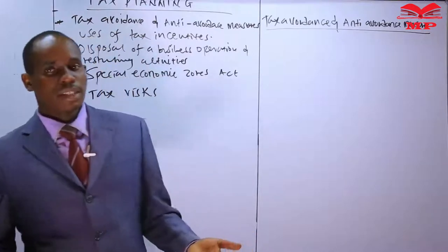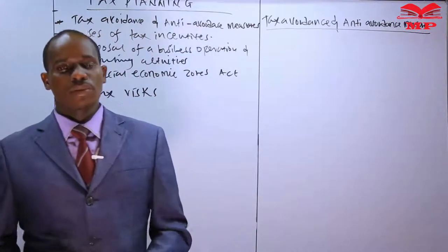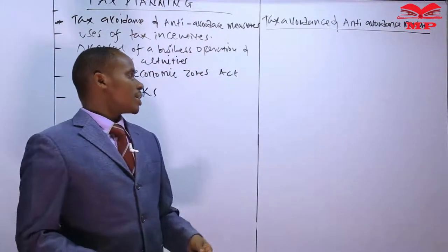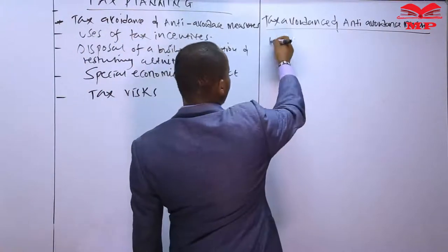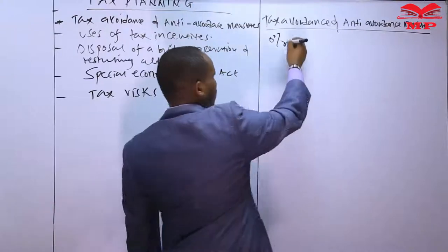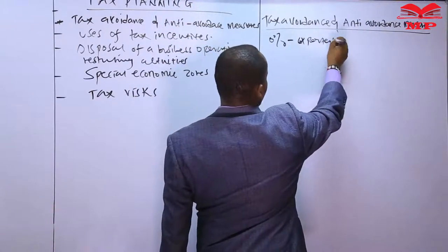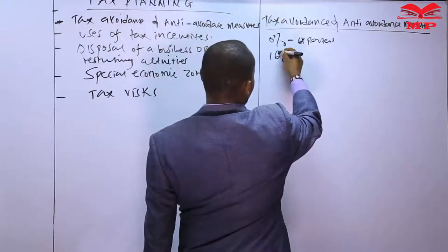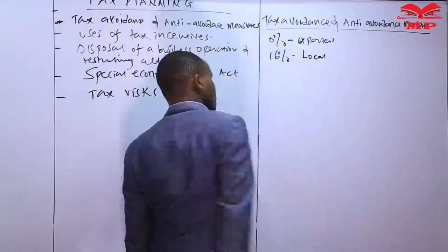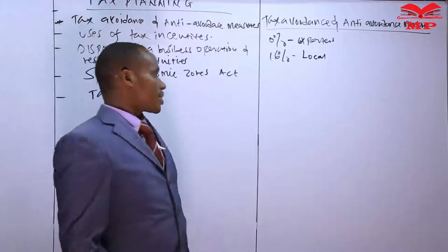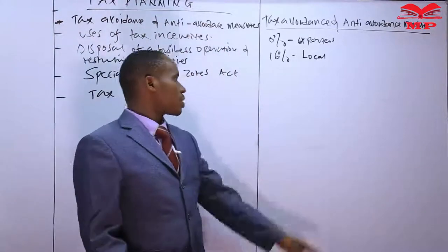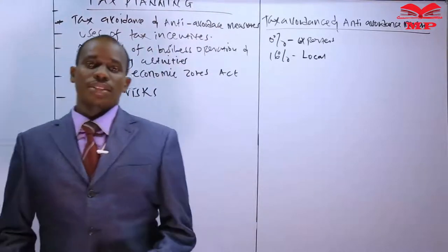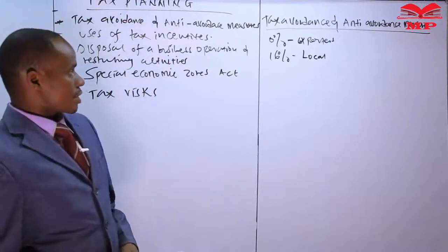Another example involves manufacturers. As a manufacturer, one can manufacture goods for export or for local consumption. If goods are manufactured for export, exports are zero-rated and VAT is charged at zero percent. However, if you are producing goods for local consumption, VAT is charged at the standard rate of 16 percent. So one can do tax avoidance by manufacturing goods for export.